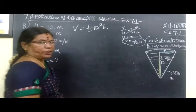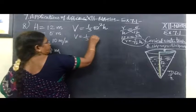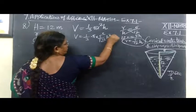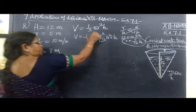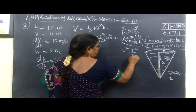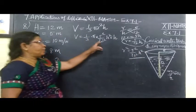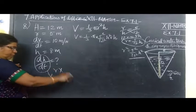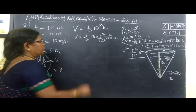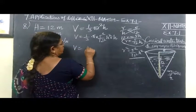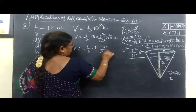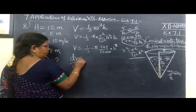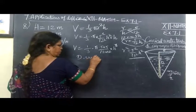We write volume in terms of H: V equals (1/3)π r² h. Substituting r = 5h/12, we get V equals (1/3)π(5/12)²h³. Now differentiate with respect to T: dV/dt equals (1/3)π times (25/144) times 3h² times dh/dt.